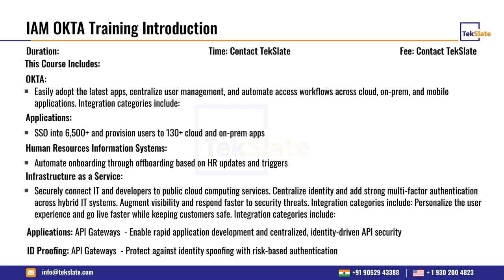Human resource information system: automate onboarding based on HR updates and triggers. Whenever there is an update in any system, how do we sync and manage those things. Infrastructure as a service — securely connect IT and developers to public cloud computing services, centralize identity and add strong multi-factor authentication across hybrid IT systems. In the current cybersecurity trend where systems are getting compromised, we need to ensure users have true-level validation before accessing applications. API gateways are one of the most trending things on cloud platforms, and ID broking protects against identity risks using risk-based authentication — all part of MFA.